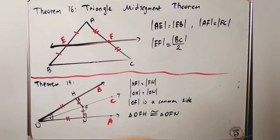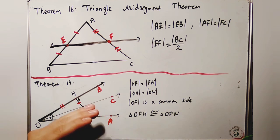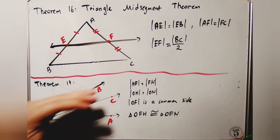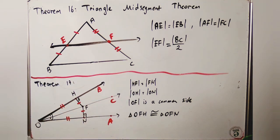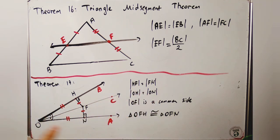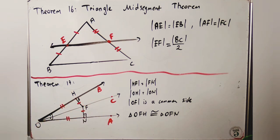In Theorem 17, OC is an angle bisector, and F is any point on OC. When we draw perpendiculars from F to OB and OA, we get FH ⊥ OB and FN ⊥ OA. So HF = FN and OH = ON. Since OF is a common side, triangle OFH is congruent to triangle OFN.